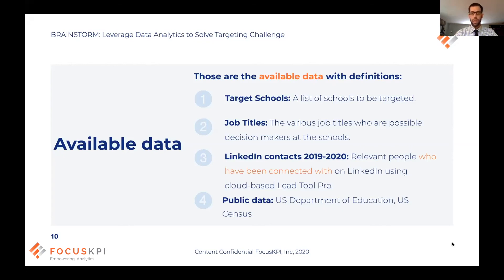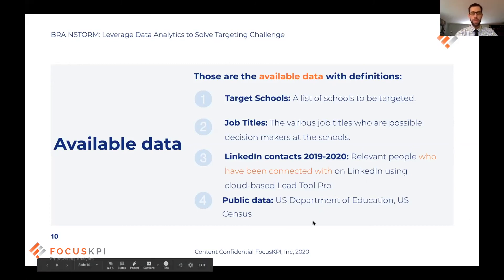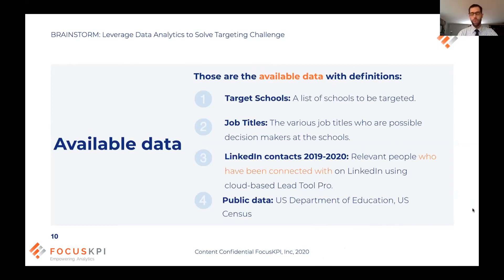Since these are brick-and-mortar schools, zip code is probably relevant — if someone lives in Massachusetts, they're not applying to a school in California. So census data at the zip code level, and Department of Education data about schools and geographic locations, might be helpful. However, our dataset from John is very small. Maybe by appending this external data we can tease out some business rules — and that's really what we're going for: business rules, not necessarily a direct model.